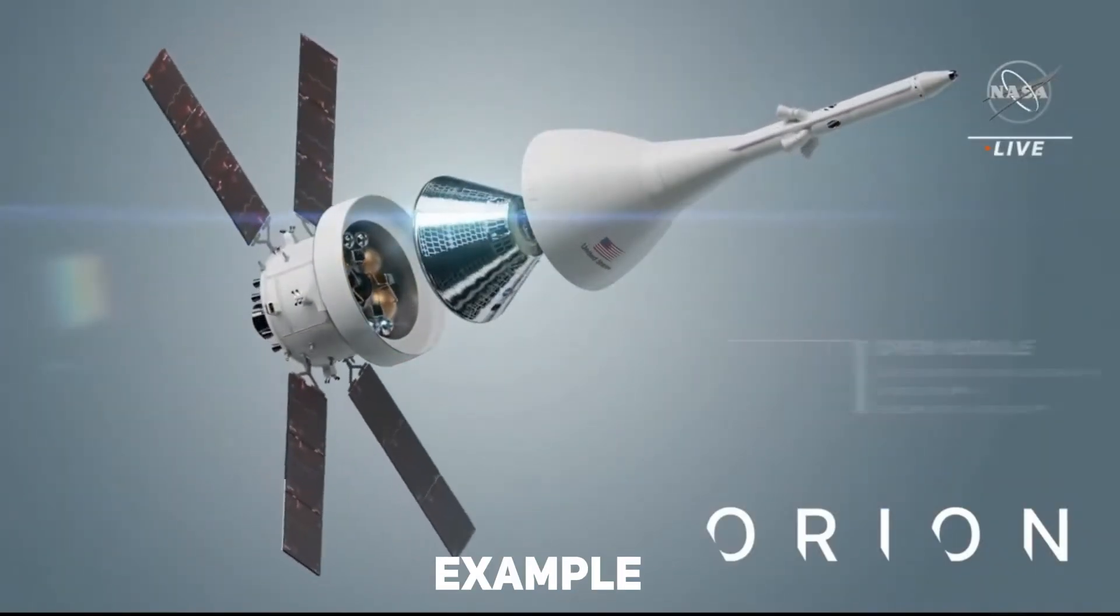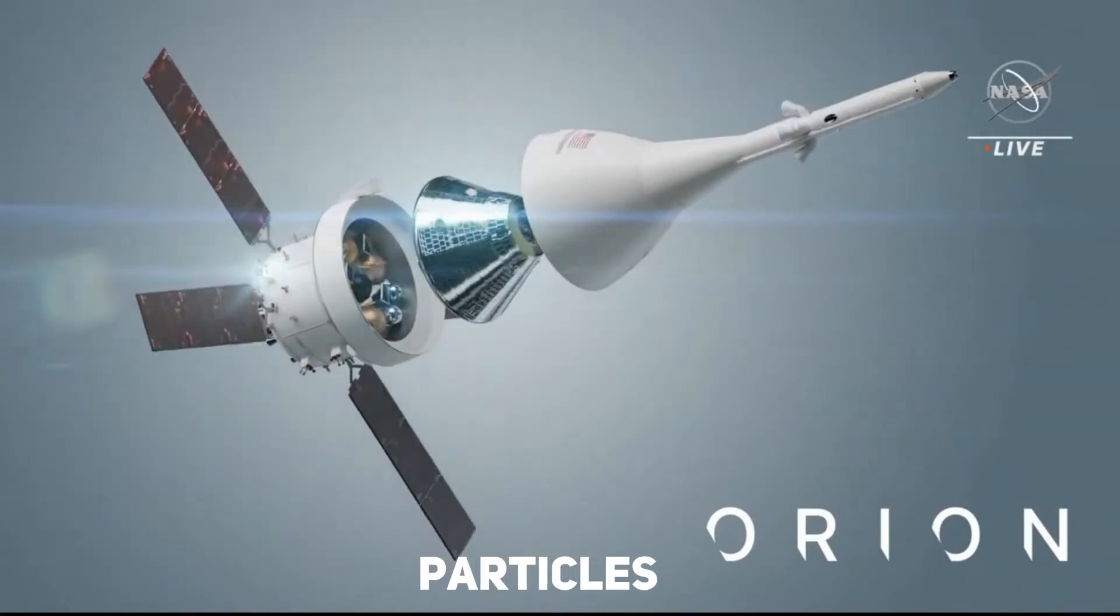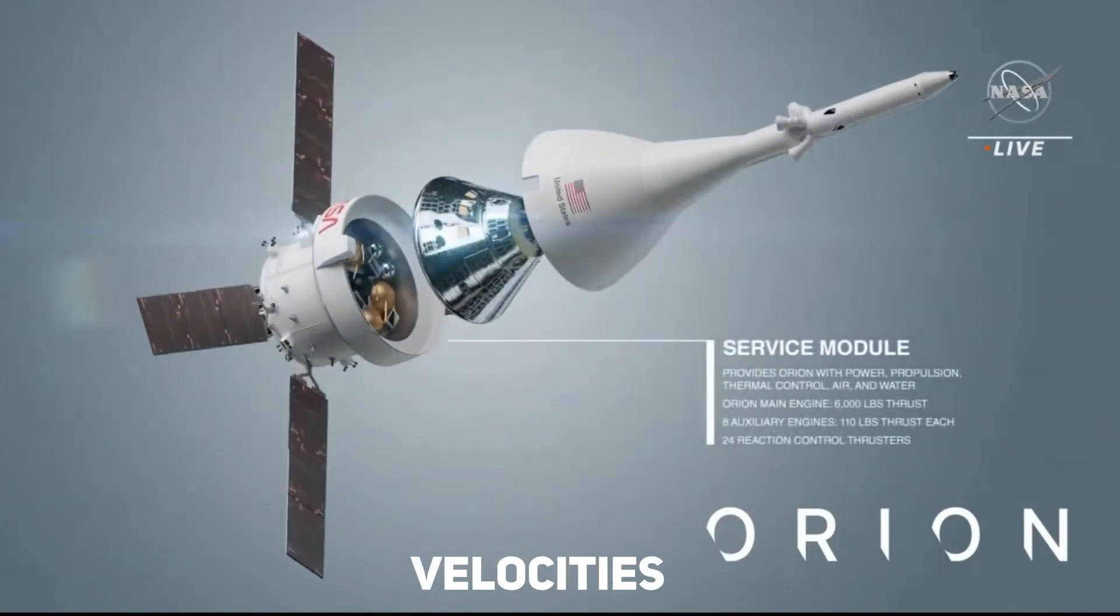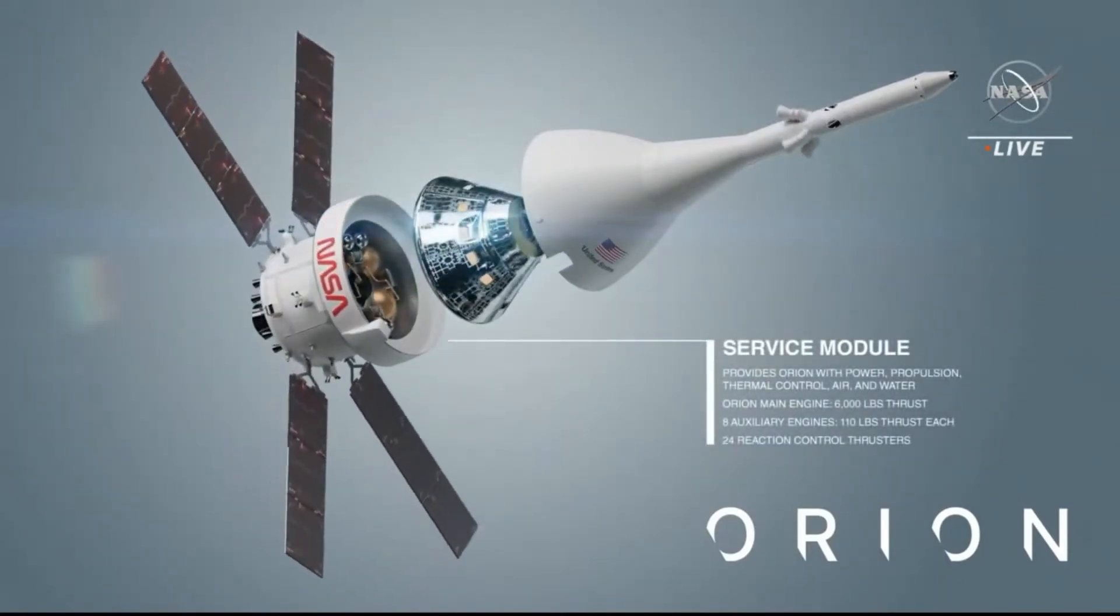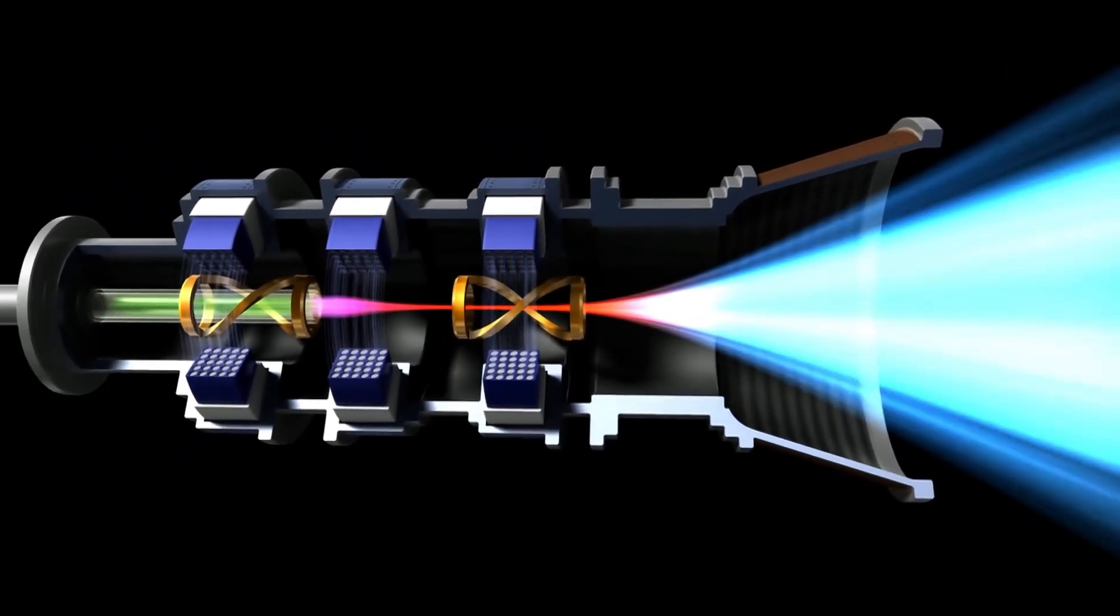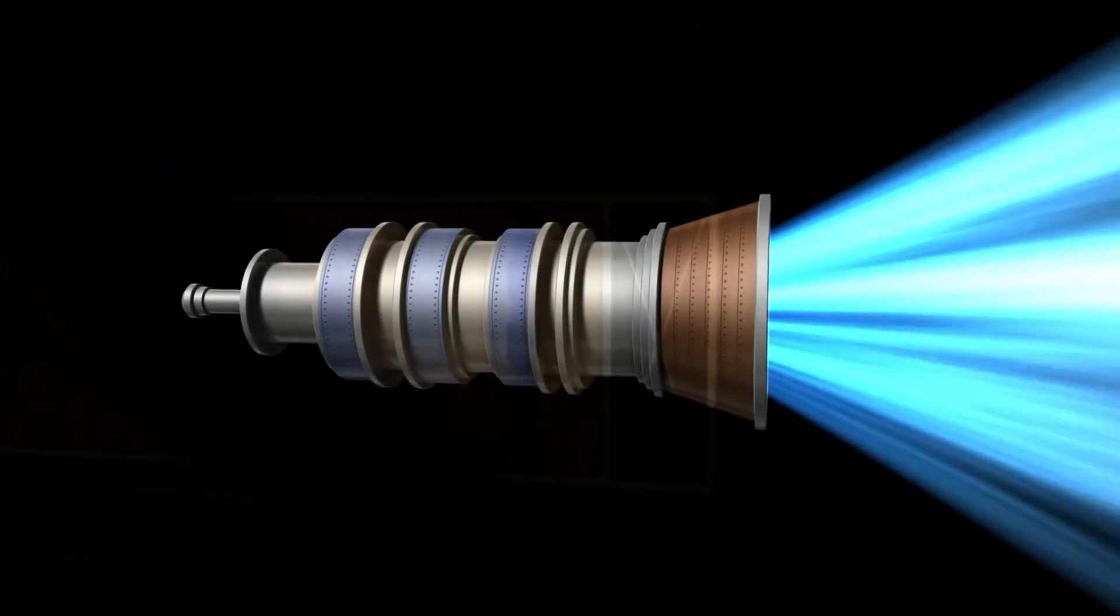The Orion spacecraft, for example, uses a thruster which ejects particles of gas at high velocities out a rear nozzle. Orion, along with the ejected gas, conserves momentum and gives the spacecraft propulsion in space.